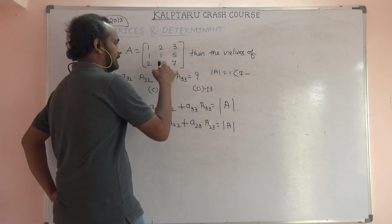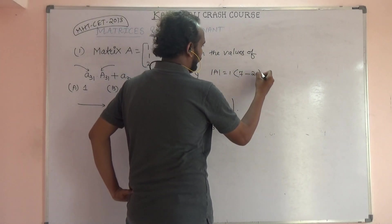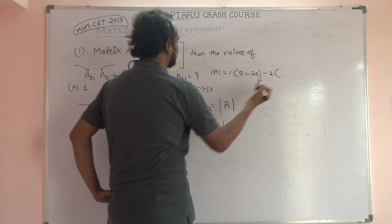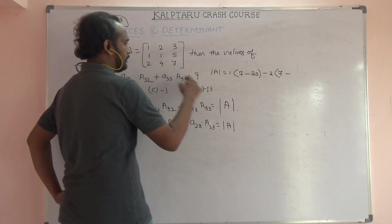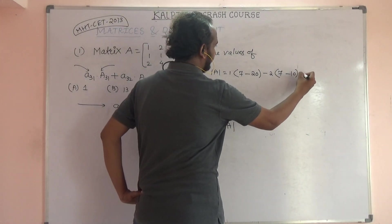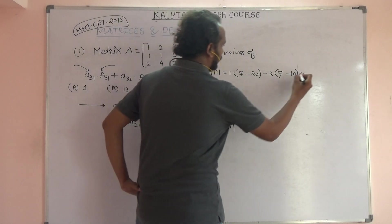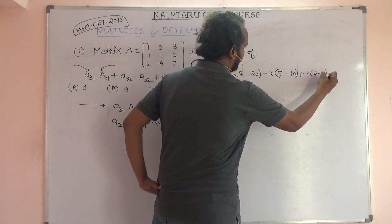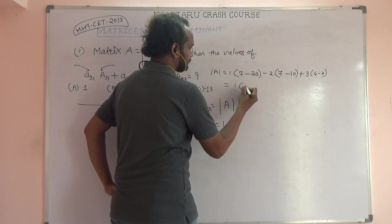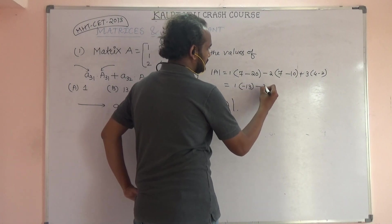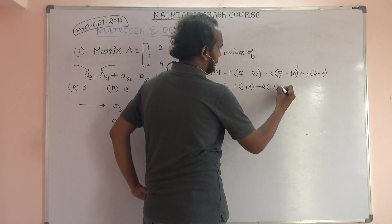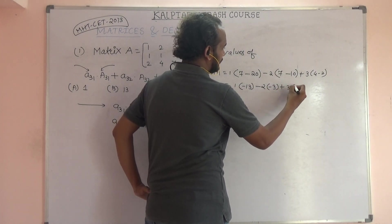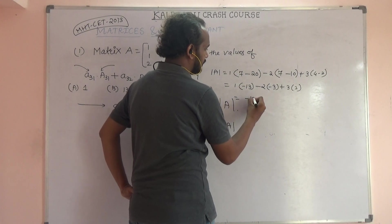1 times 7 minus 20, minus 2 times 7, minus 5 into 2 that is 10, plus 3 into 4 minus 2, that is 4 minus 2, minus 13, minus 2 into minus 3, plus 3 into 2.